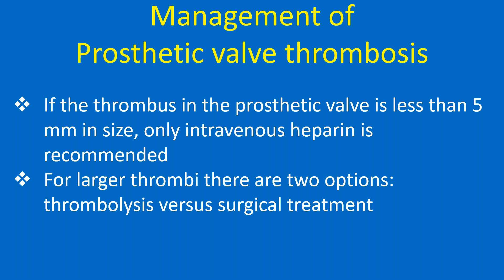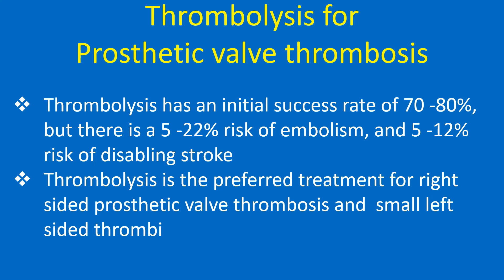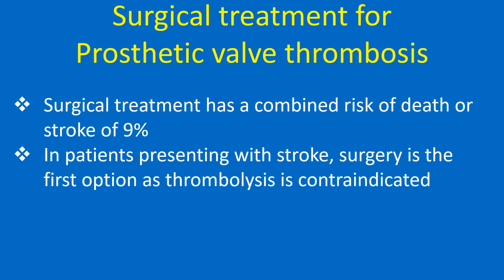Regarding management: if the thrombus in the prosthetic valve is less than 5 mm in size, only intravenous heparin is recommended. For larger thrombi there are two options — thrombolysis versus surgical treatment. Thrombolysis has an initial success rate of 70–80%, but carries a 5–22% risk of embolism and 5–12% risk of disabling stroke. Thrombolysis is preferred for right-sided prosthetic valve thrombosis and small left-sided thrombi. Surgical treatment has a combined risk of death or stroke of 9%. In patients presenting with stroke, surgery is the first option as thrombolysis is contraindicated.